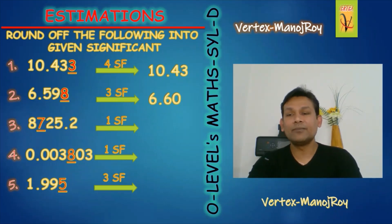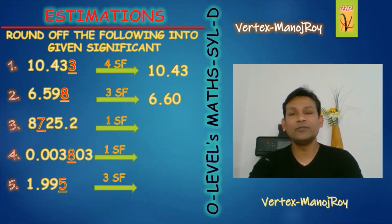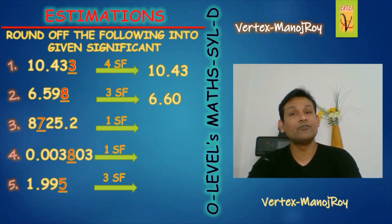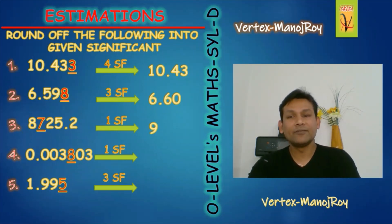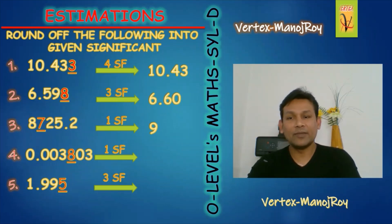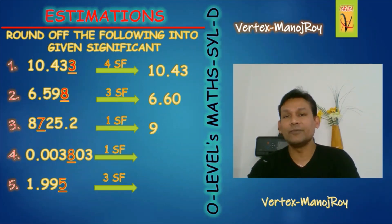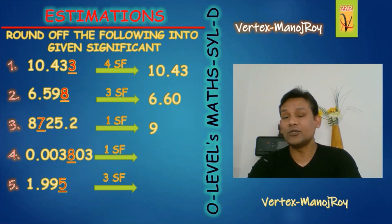The third example: 8725.2 into one significant figure. The second number — 7 — should be dropped. A common mistake is to write 9 as the answer. But remember: where is the decimal? The decimal is after four numbers. So we must adjust with zeros up to the decimal point. We write three zeros to fill up to the decimal. The correct answer is 9000.